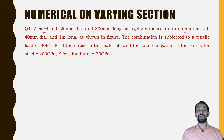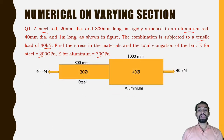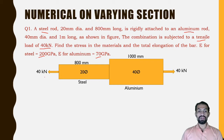The combination is subjected to a tensile load of 40 kilo newton. We need to find the stress in the materials and the total elongation of the bar. E for steel is given as 200 GPa and E for aluminium is 70 GPa. From the figure, we see the steel rod of 20 mm diameter and 800 mm long, and the aluminium rod of 40 mm diameter and 1000 mm long. Both are subjected to a tensile load of 40 kilo newton.